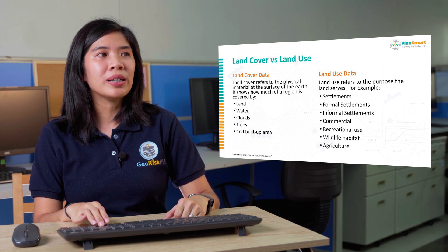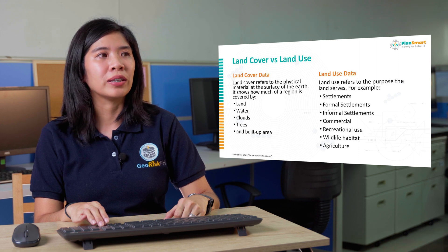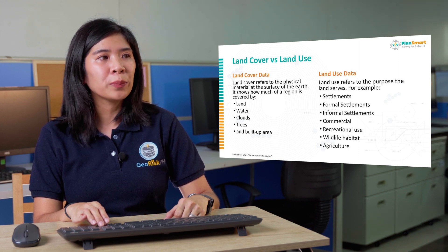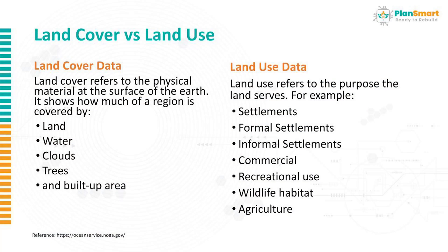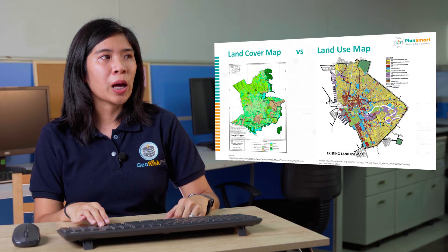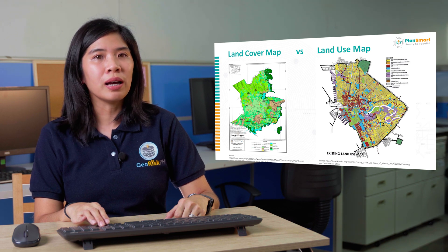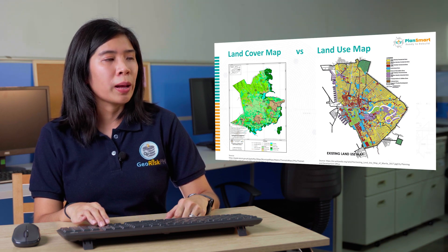What is land use? Land use refers to the purpose the land serves. For example, a recreational area could occur in grassland, shrubs, or even in an open space. Another example is that a previously agricultural area is converted into a settlement. This is an example of land cover data and a land use map.